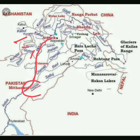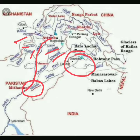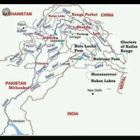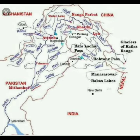Moving southwest, the Indus meets the Panchanadi — the five rivers of Punjab. These are Jhelum, Chenab, Ravi, Sutlej, and Beas. You can locate Beas on the map here.